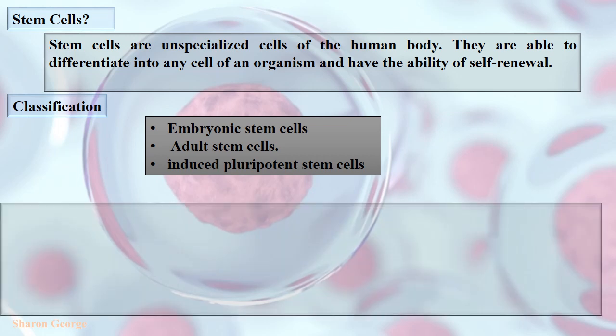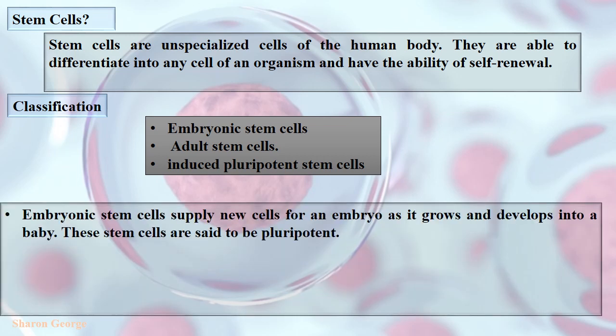Embryonic stem cells can supply new cells for an embryo as it grows and develops into a baby. These kinds of cells are pluripotent in nature, which means they can change into any cell in the body.